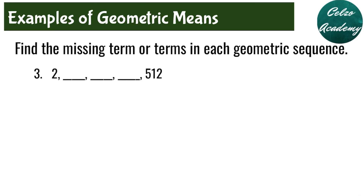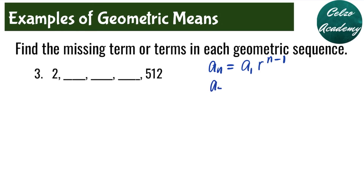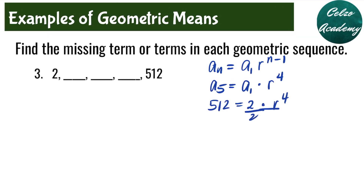Question number 3: find the missing three terms in this geometric sequence. First, we solve for the common ratio using a sub n is equal to a sub 1 times r to the power of n minus 1. We have 5 terms total, so a sub 5 is equal to a sub 1 times r to the power of 5 minus 1, which is r to the 4th. Our a sub 5 is 512, and our a sub 1 is 2. So 512 equals 2 times r to the 4th. Dividing both sides by 2, we get 256 is equal to r to the 4th power.